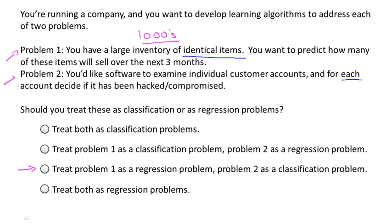And for the second problem, I would treat that as a classification problem, because I might say, set the value I want to predict to be zero to denote the account has not been hacked, and set the value one to denote an account that has been hacked into. So just like breast cancer, zero is benign, one is malignant. So I might set this to be zero or one, depending on whether it's been hacked, and have an algorithm try to predict each one of these two discrete values. And because that's a small number of discrete values, I would therefore treat it as a classification problem.